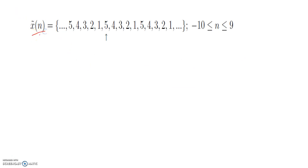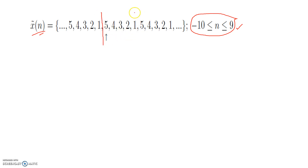See here: x-cap of n equals dot dot dot 5 4 3 2 1 5 4 3 2 1 5 4 3 2 1 dot dot. It is going on, and from minus 10 to 9 you have to plot this sequence. So n ranges from minus 10 to 9 — minimum is minus 10, maximum is 9. Just by reading this sequence you can understand that this is a periodic sequence where the fundamental sequence is the part 5 4 3 2 1, and this part repeats throughout the whole range, making the original periodic sequence x-cap of n.